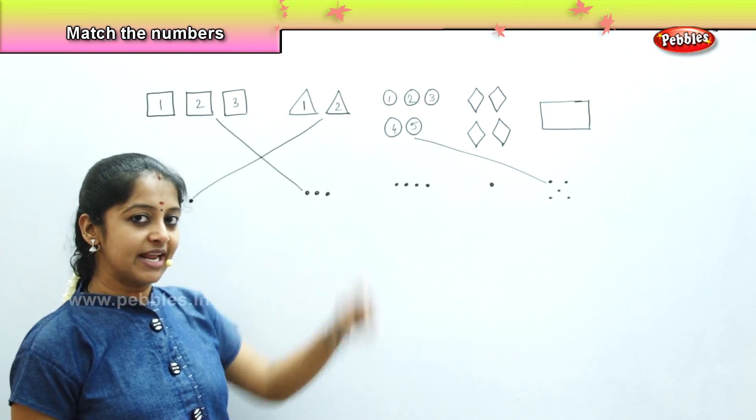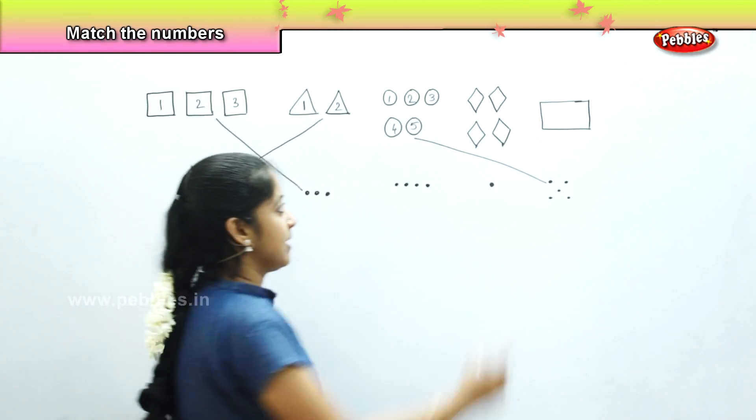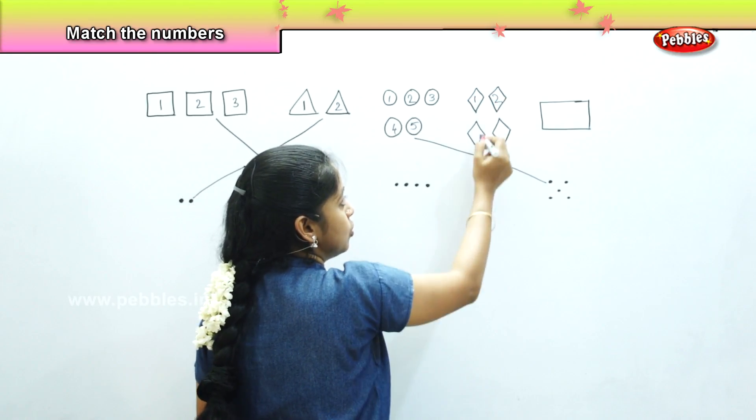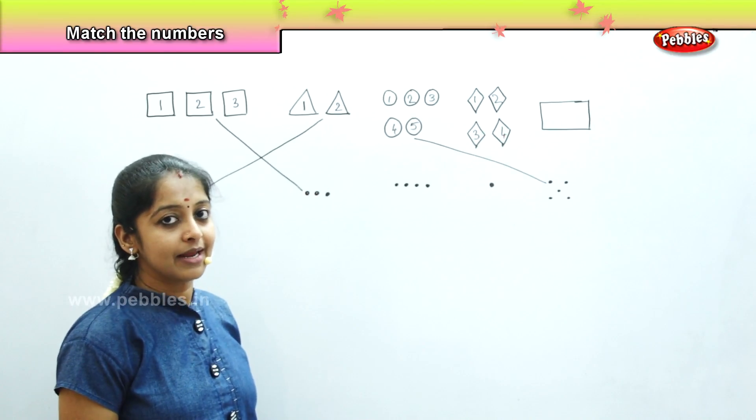So, now shall we try with the next object? What is the next object? It is diamond. Yes. How many diamonds? 1, 2, 3, 4. There are 4 diamonds. Right.